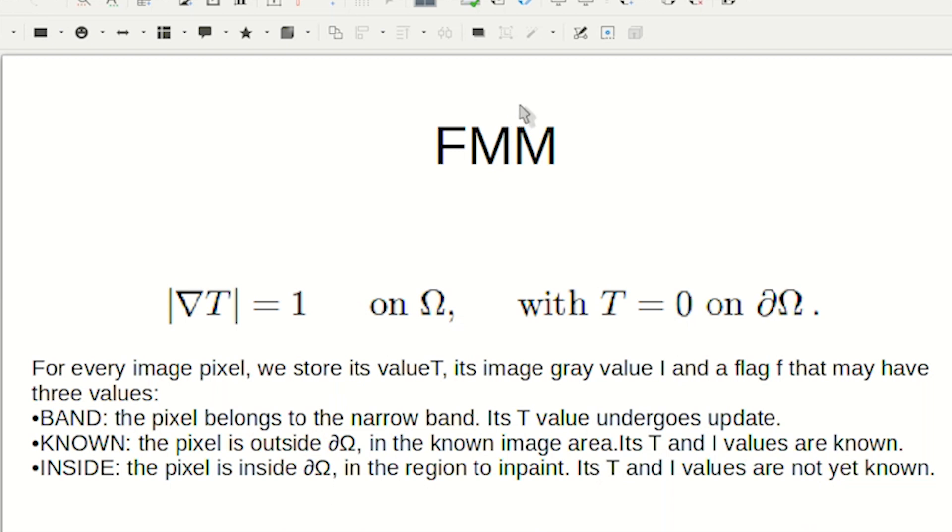To implement this, we use FMM, which is an algorithm that solves the eikonal equation. When we solve this, the solution for T gives you a distance map of Omega pixels to the boundary ∂Ω. Using this map, we ensure that pixels of ∂Ω are always processed in increasing order of distance.